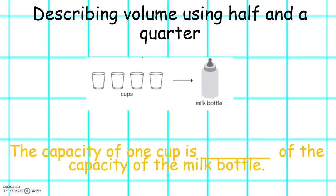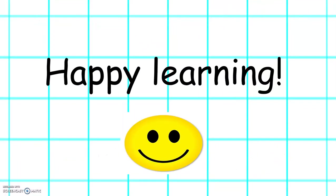And let's try this one. The capacity of one cup is something of the capacity of the milk bottle. What do you think it is? Well done. The capacity of one cup is a quarter of the capacity of the milk bottle. Happy learning!